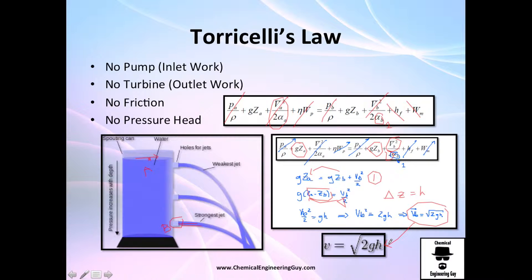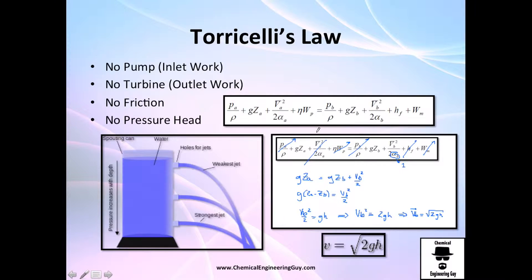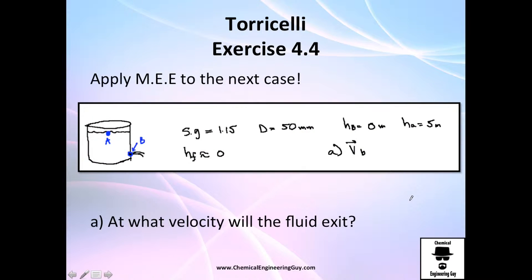Perfect, hopefully you got the idea, let's do an exercise, it's pretty easy. We got this case, this is a tank, let's say it's atmospheric, specific gravity of the substance is 1.15, the diameter, the hole's diameter is 50 millimeters, so that's very important guys, and here as you can see there's no diameter in any equation, so you need to force the diameter to appear with respect to velocity. Remember, velocity is a function of diameter.